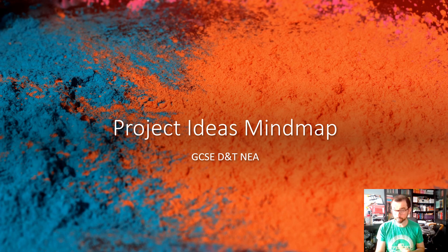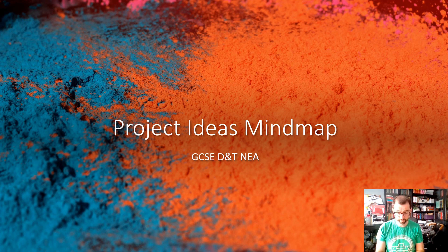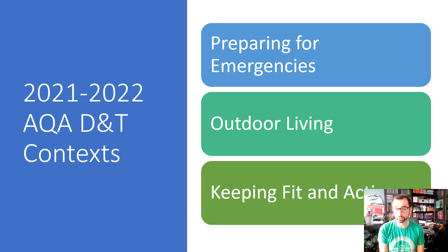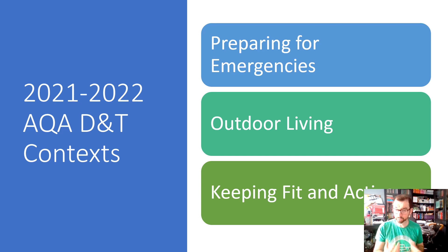Just a quick reminder, because there might be one or two people not there or a few people who have already forgotten what the contexts are. The contexts are the theme that the projects have to meet this year, and we've got three themes — you've got to pick one. Our three themes are: preparing for emergencies, which I think is the hardest of the three; outdoor living; and keeping fit and active, both of which I think are quite similar in terms of how many ideas we can come up with.